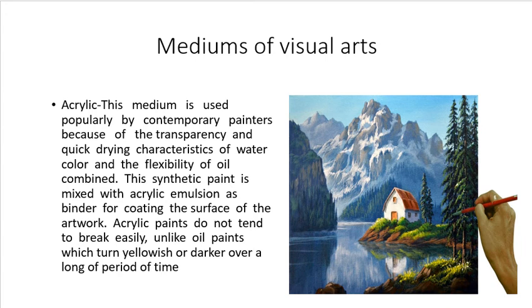Next is acrylic. This medium is used popularly by contemporary painters because it combines the transparency and quick-drying characteristics of watercolor with the flexibility of oil. This synthetic paint is mixed with acrylic emulsion as a binder for coating the surface of the artwork. Acrylic paints do not tend to break easily unlike oil paints, which turn yellowish or dark over a long period of time.